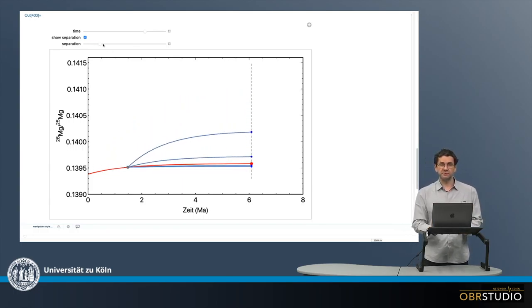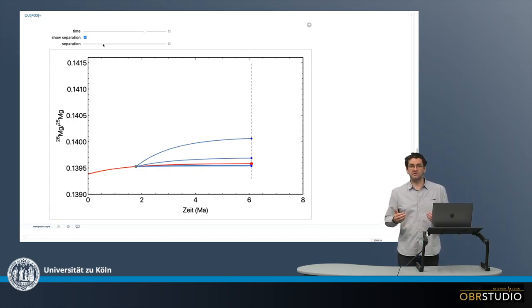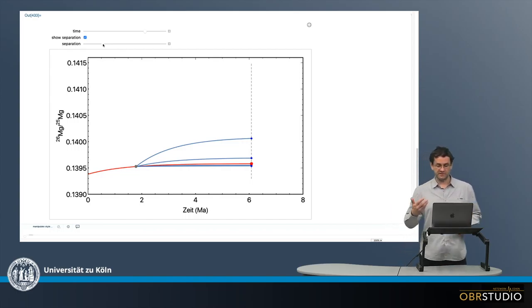which is clear because the amount of 26 aluminum decreases over time. And if there's less aluminum 26, then there's less radiogenic magnesium that can be formed within this reservoir.